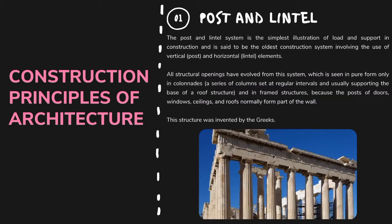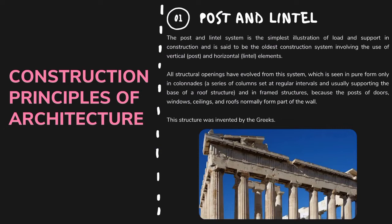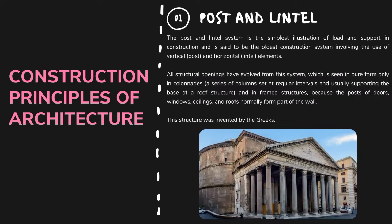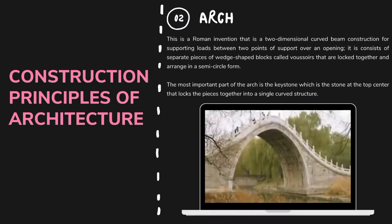All structural openings have evolved from this system, which is seen in pure form only in colonnades — a series of columns set at regular intervals usually supporting the base of a roof structure — and in frame structures, because the posts of doors, windows, ceilings, and roofs normally form part of the wall. This structure was invented by the Greeks.